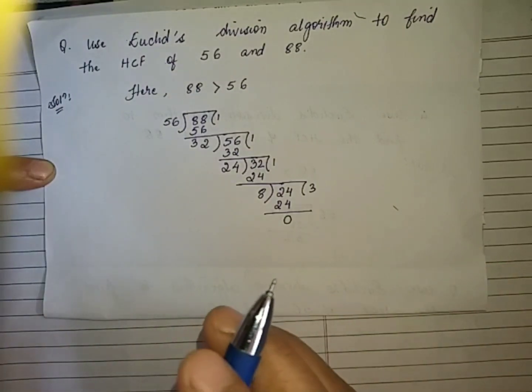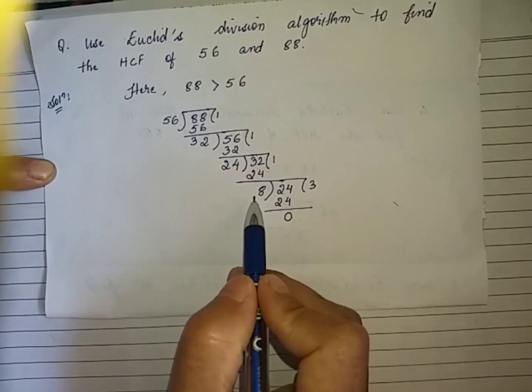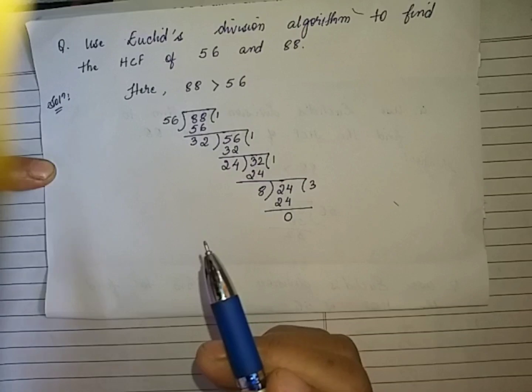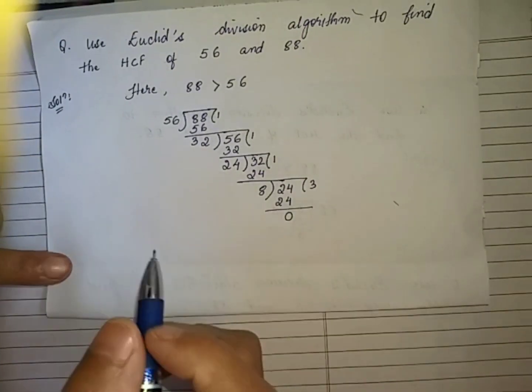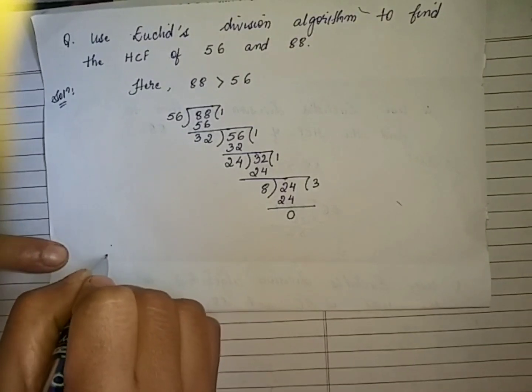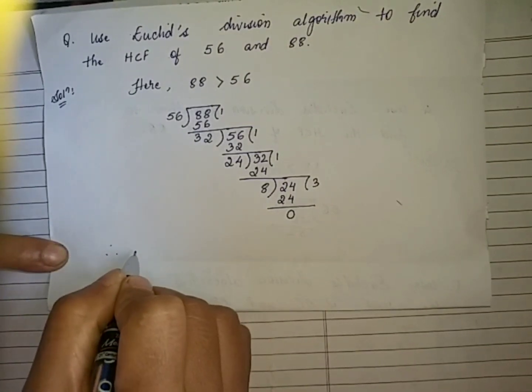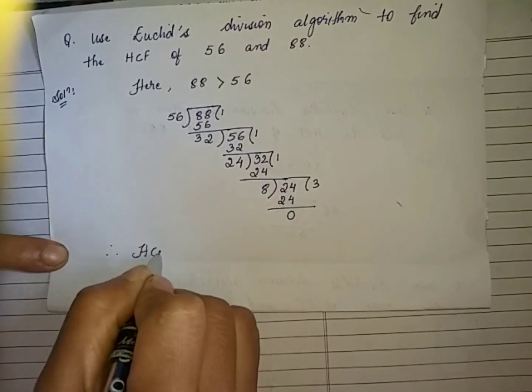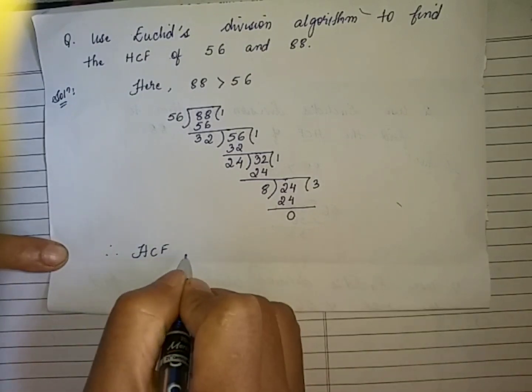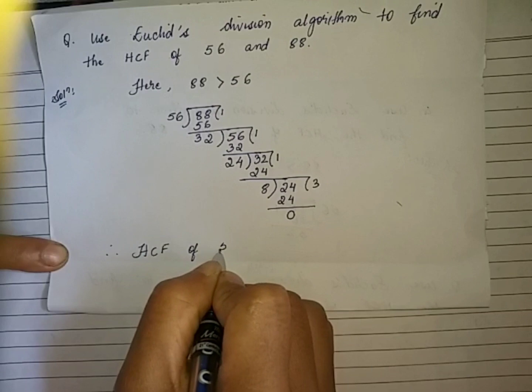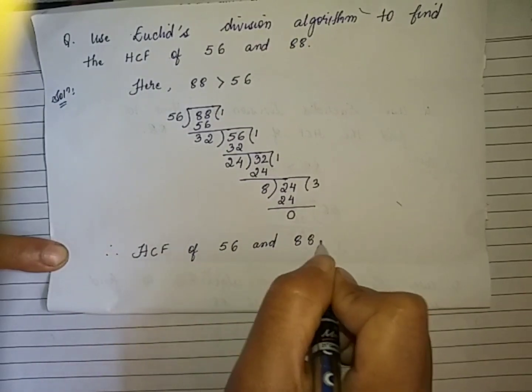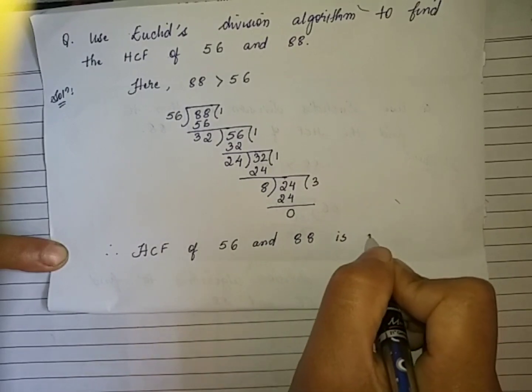Our required HCF will be the last divisor or our last non-zero remainder. What is our last remainder? It is 8. Therefore, the required HCF or the highest common factor of 56 and 88 is 8.